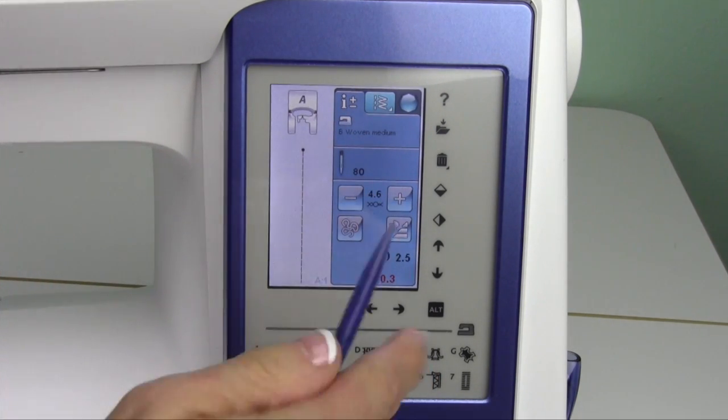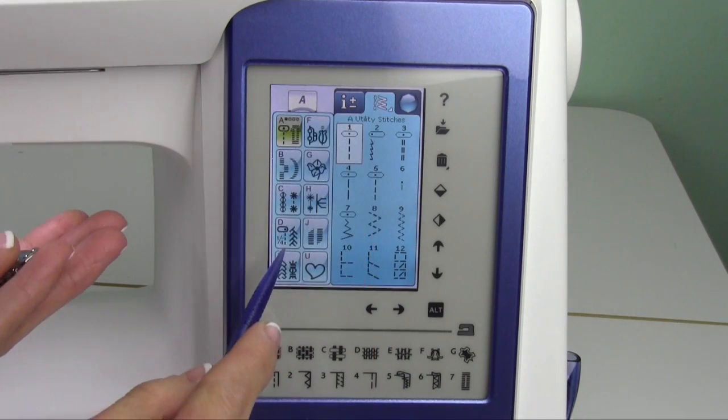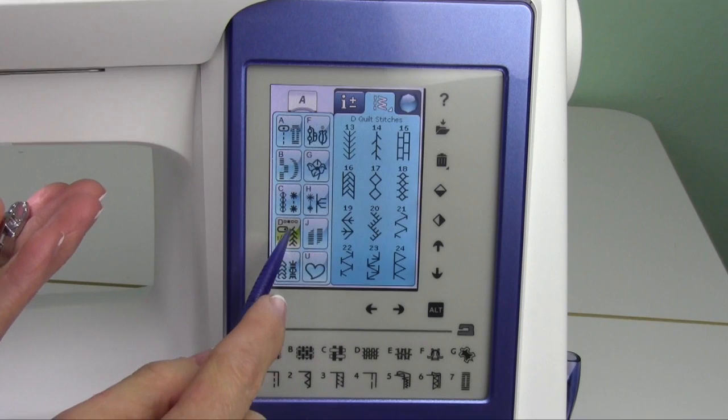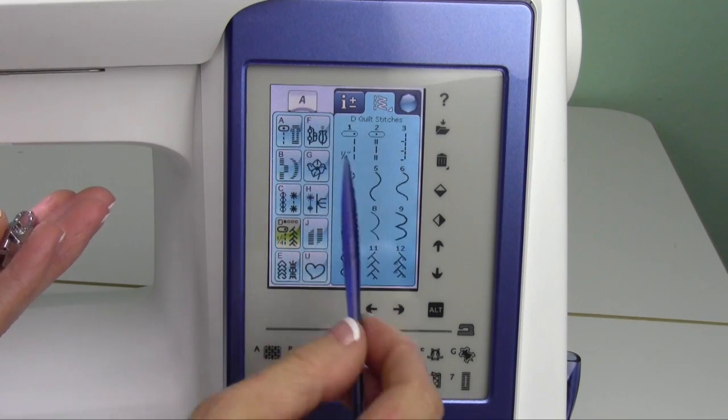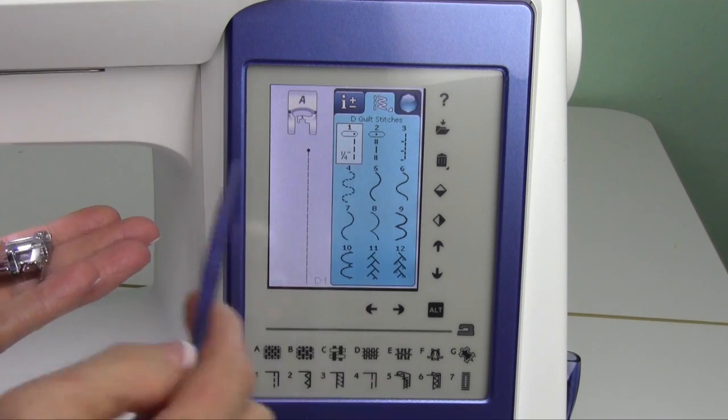On this machine, you're going to notice that you have a quilting area and that will be your D option. Here we go back at the beginning. Quilt stitches, your very first one says one quarter inch on it.